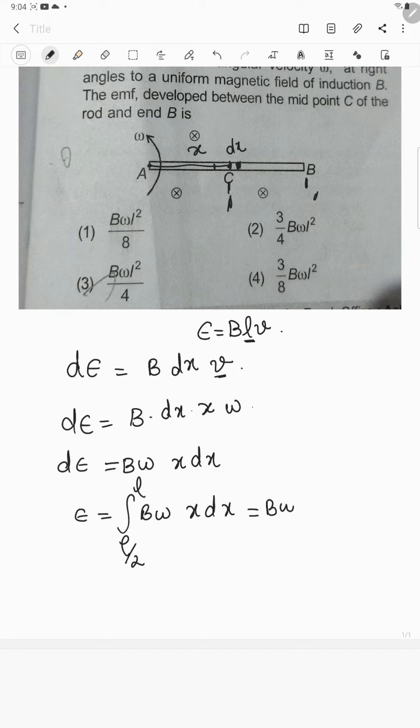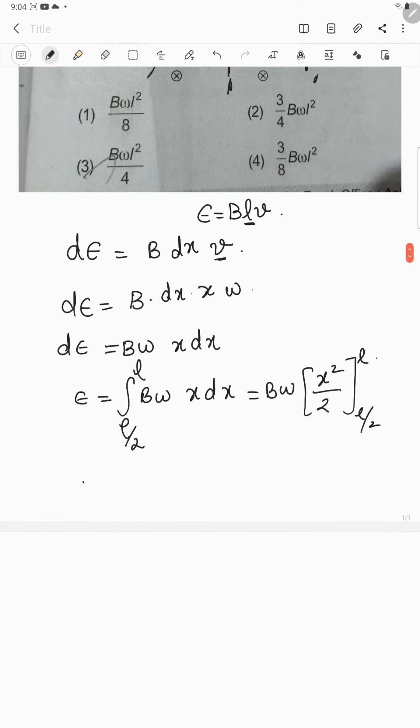So B omega you can take out of the integral. X DX if you integrate you will be getting X square by 2. So X square by 2 over the limit L by 2 to L. So finally you will be getting B omega into L square by 2. So 2 also can be taken out. L square minus L square by 4, which is equal to 3L square by 4 into B omega by 2. Therefore your epsilon value is 3L square B omega divided by 8.